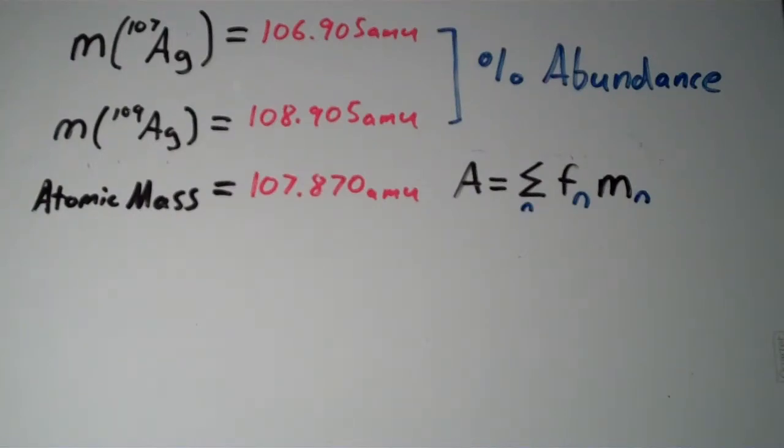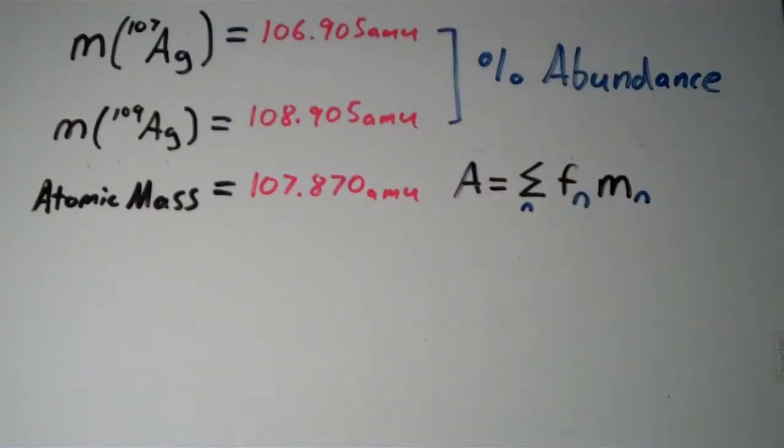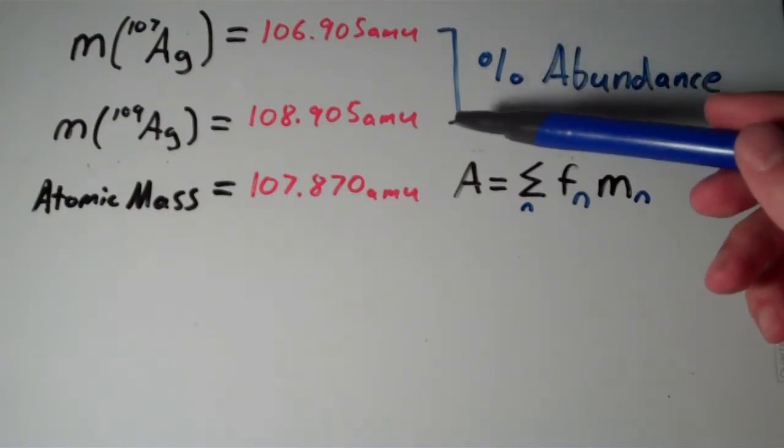This problem says we have two naturally occurring isotopes of silver, silver 107 and silver 109. The mass of silver 107 is 106.905 AMU. The mass of silver 109 is 108.905 AMU.